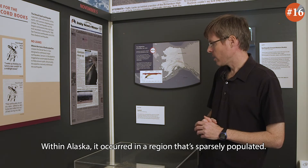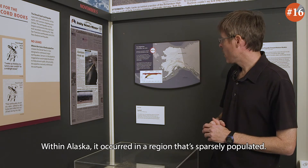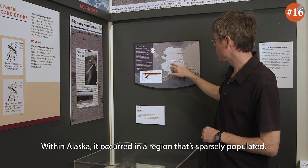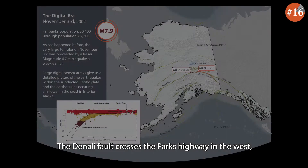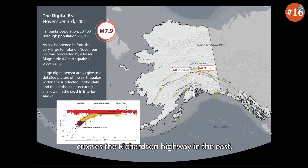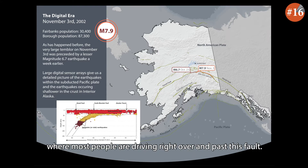Within Alaska, it occurred in a region that's sparsely populated. The Denali Fault crosses the Parks Highway in the west and crosses the Richardson Highway in the east. Most people are driving right over and past this fault.